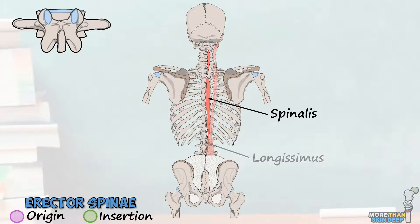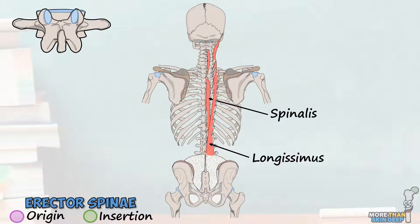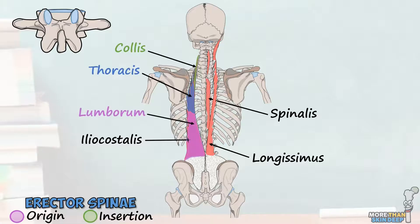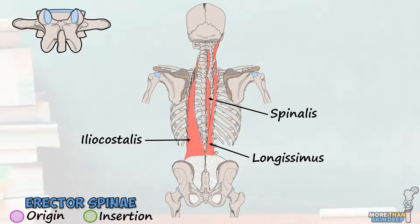Lateral to the spinalis is the large longissimus muscle, which can again be divided into capitis, cervicis, and thoracis parts. This originates from the common tendinous origin and the transverse processes of C4 to T6, to insert into the transverse processes of C2 to C7, all of the transverse processes of the thoracic and lumbar spine, the second to twelfth ribs, and the mastoid process of the skull. The third and final erector spinae muscle is the lateral iliocostalis. This broad, flat muscle can be split into cervicis, thoracis, and lumborum parts, and its function is again to both flex and extend the back. Iliocostalis originates from the common tendinous origin, the spinous processes of L1 to L5, and the angles of the third to twelfth ribs, and inserts into the transverse processes of L1 to L4, the angles of the first to twelfth ribs, and the transverse processes of C4 to C6.